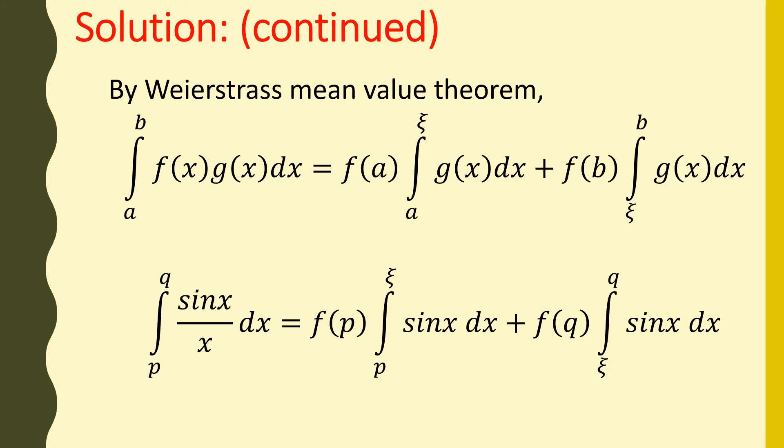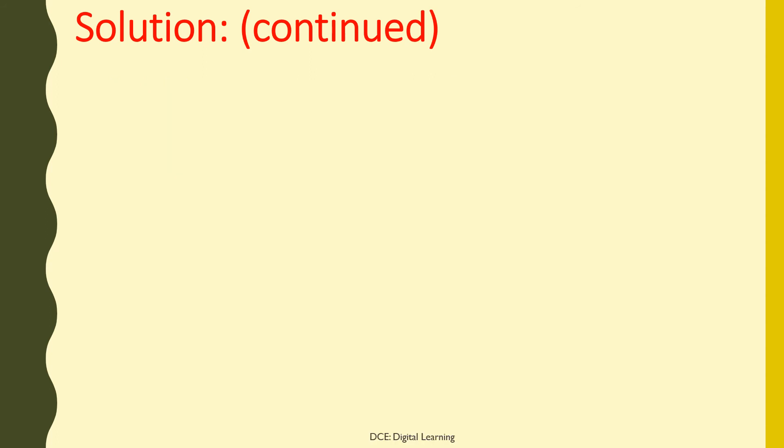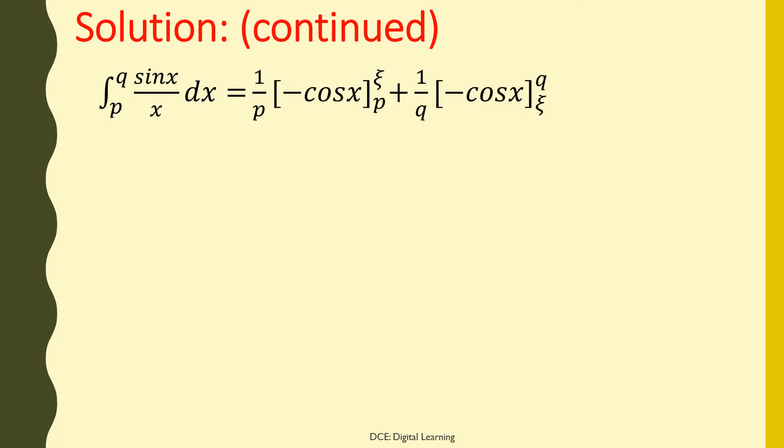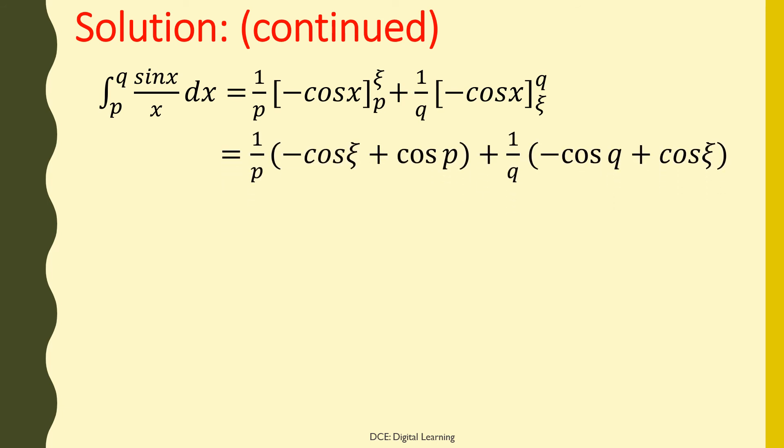Therefore, the integral of sin(x)/x dx from p to q equals f(p) times the integral of sin(x) dx from p to η, plus f(q) times the integral of sin(x) dx from η to q. On integration, this equals (1/p)[-cos(x)] from p to η, plus (1/q)[-cos(x)] from η to q, which equals (1/p)(-cos η + cos p).